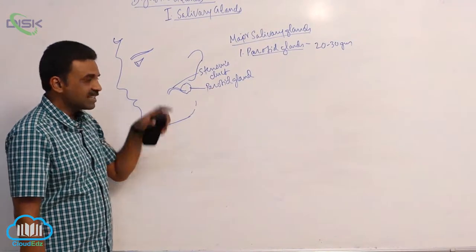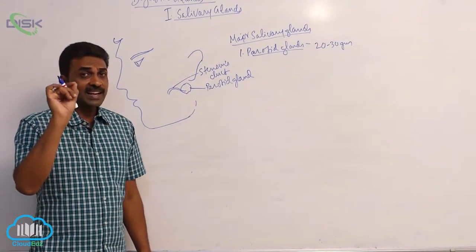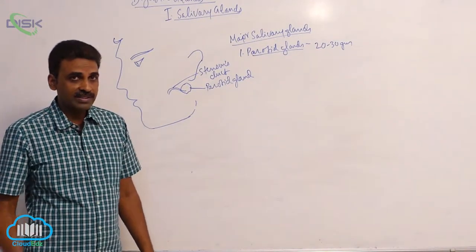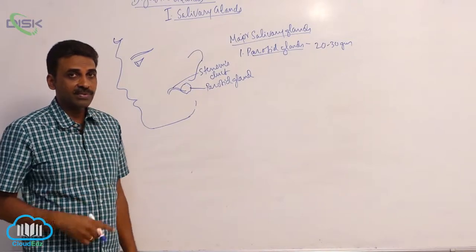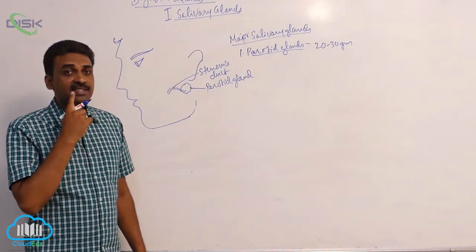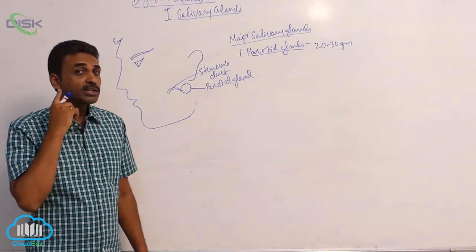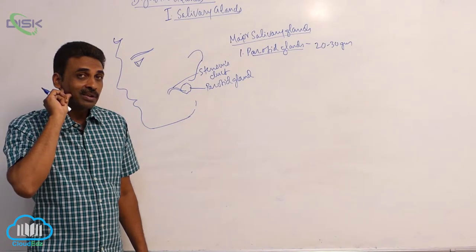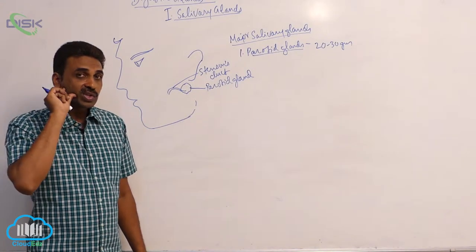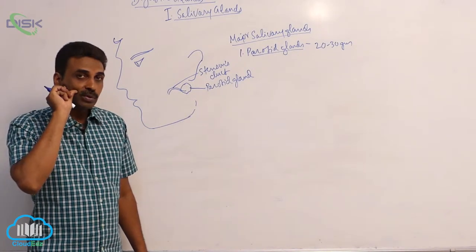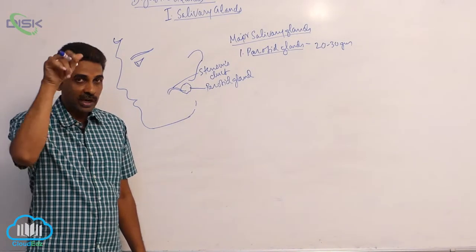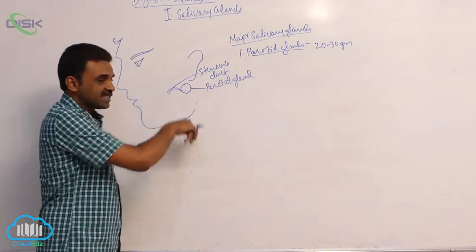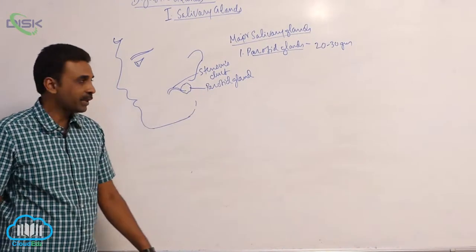Stenson's duct opens near the second upper molar. Teeth are arranged as incisors, canines, premolars, and molars. We have three molars at the top, and the Stenson's duct opens at the second molar.